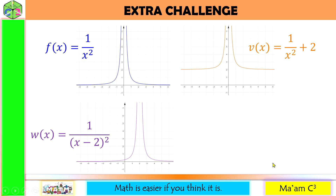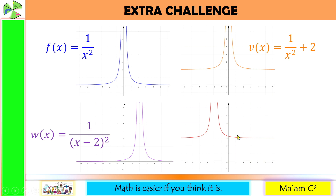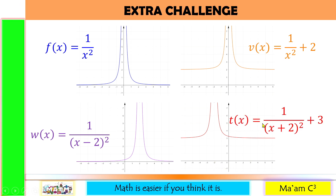Now what if we have a graph that moved both up and to the left? It moved 3 units upward and 2 units to the left. The equation will be t(x) = 1/(x + 2)² + 3, since it moved 3 units up.